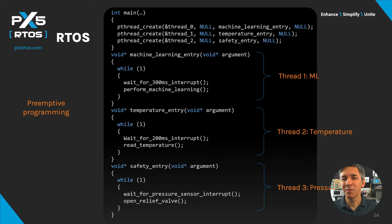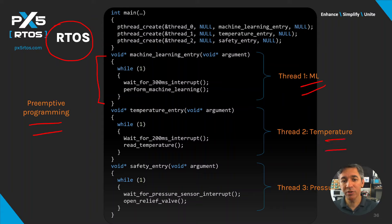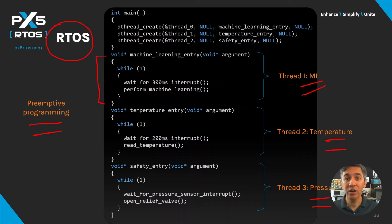With the aid of an RTOS, the example device can be restructured using preemptive programming. The program is partitioned into three threads: the machine learning thread, the temperature thread, and the safety pressure thread. The pseudocode shows the implementation of these three threads. The periodic tasks rely on timer interrupts to wake them up. Unlike the bare metal solution, the threads are not aware of the timing of the other threads — and they don't need to be.